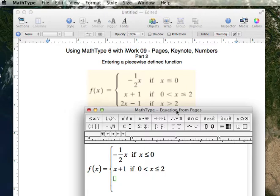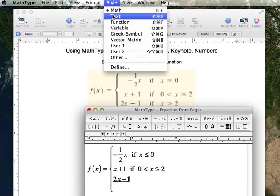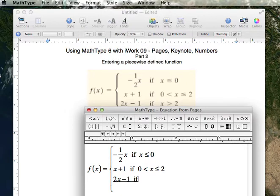Slide this up a little bit, and type the last equation. If, 2x minus 1, and back to style, if, two spaces, back to Math, x, the greater than is on your computer keyboard, over the period button.